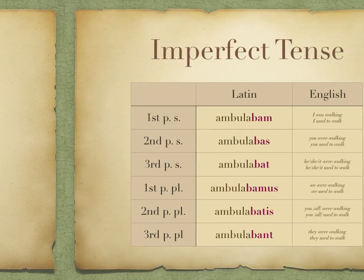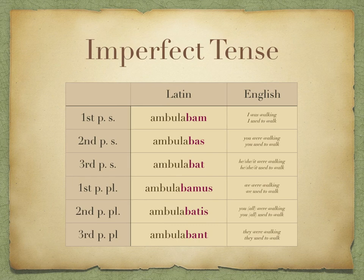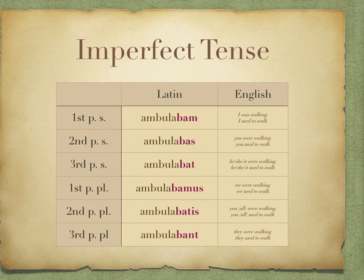The imperfect tense is very recognisable by the -ba- in the endings: bam-bas-bat, bamus-batis-bant. Again, there are a couple of different ways you can translate these, but the idea is that it's an ongoing action in the past, or a repeated action in the past.